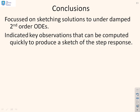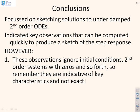So in conclusion, we've shown that you can sketch solutions to underdamped second-order ODEs using relatively straightforward computations and therefore fairly quickly. Key observations allow you to compute an indicative sketch quickly. Now, just some warnings. These observations assume you've got zero initial conditions. So obviously if you don't have zero initial conditions, you're not going to be able to use the calculations we've used here. However, you are going to have the same indicative key characteristics, which is the ratio of peak to peak in terms of times and decay rate.